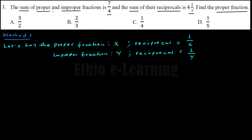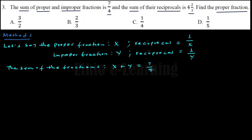So the sum of proper and improper fractions is 7 over 4. This means proper fraction plus improper fraction: x plus y is equal to 7 over 4. That is equation one.